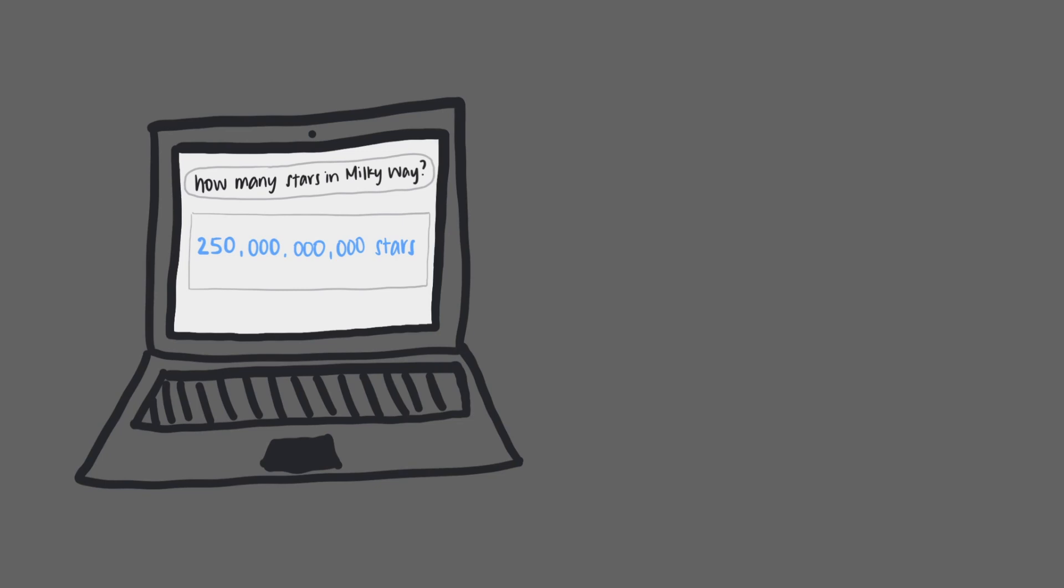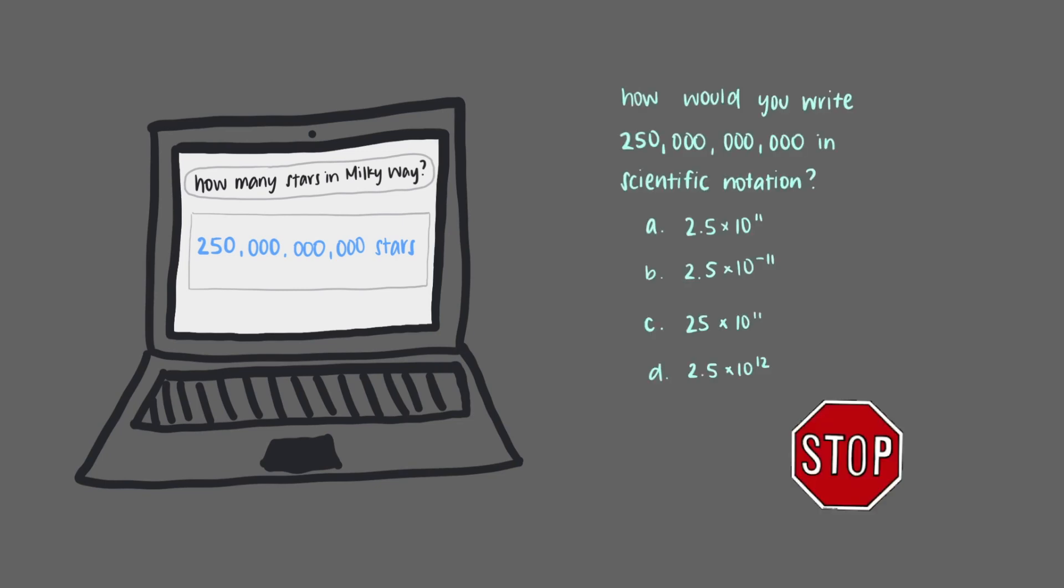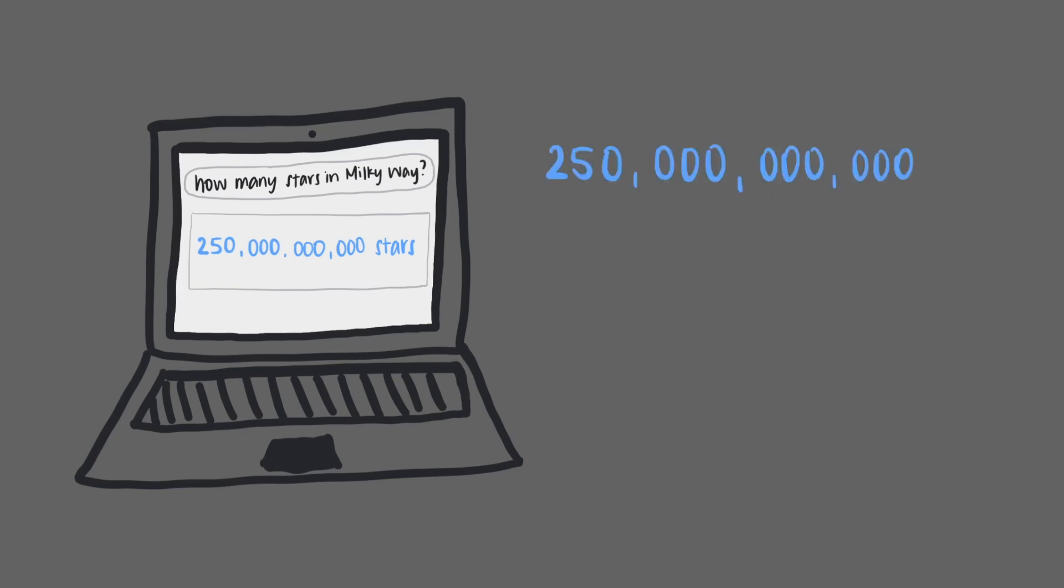But let's go back to our stars in the Milky Way. How would you write 250 billion in scientific notation? To write 250 billion in scientific notation, we need to move the decimal point 11 places to get 2.5.